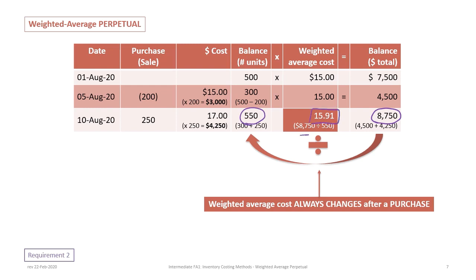We take $8,750 and divide by 550 units, giving us an average cost of $15.91. This makes sense because our beginning inventory was valued at $15 and we made a purchase at $17, which raises the average. After making a purchase, the average value of inventory will increase if the price increases, or decrease if it's lower than the current average. The key point: the average cost never changes after a sale, but always changes after a purchase.